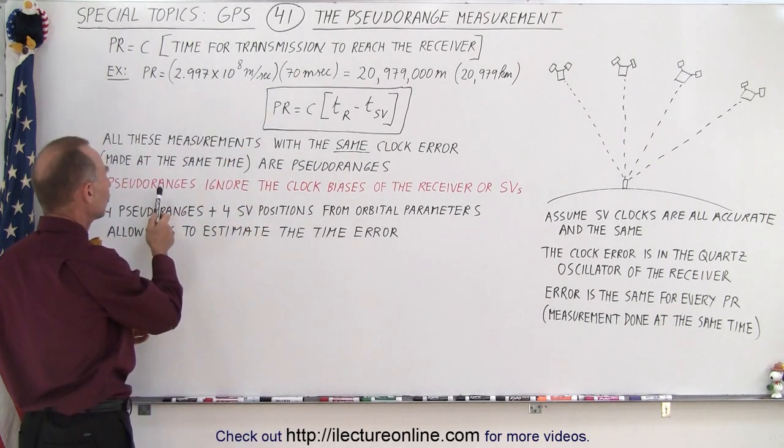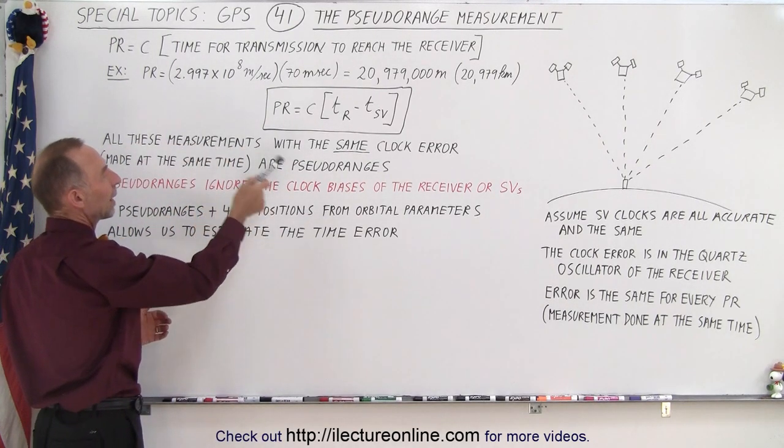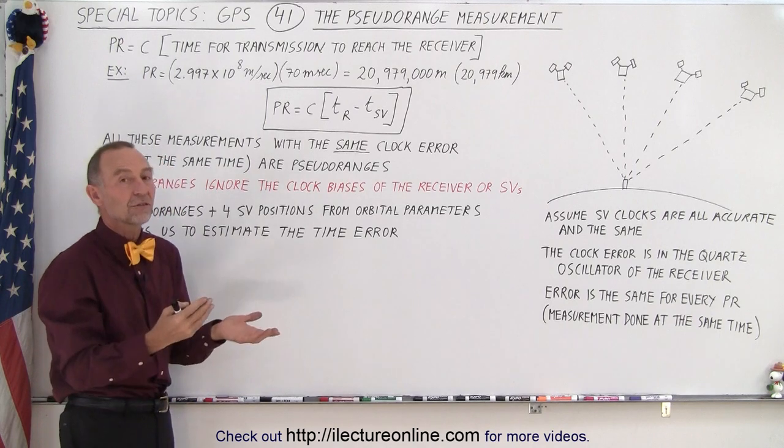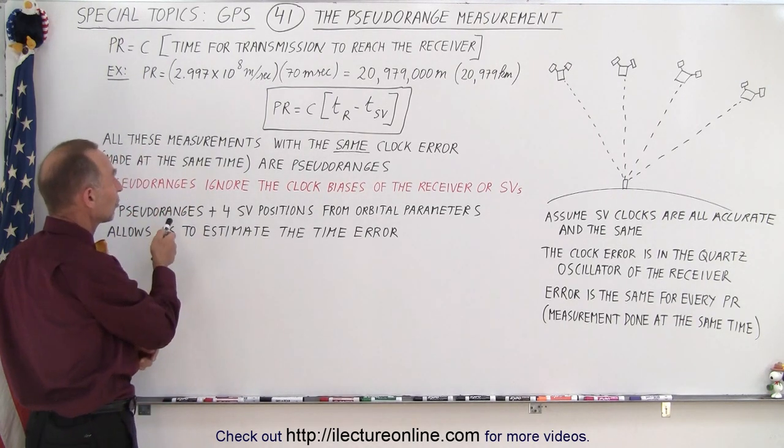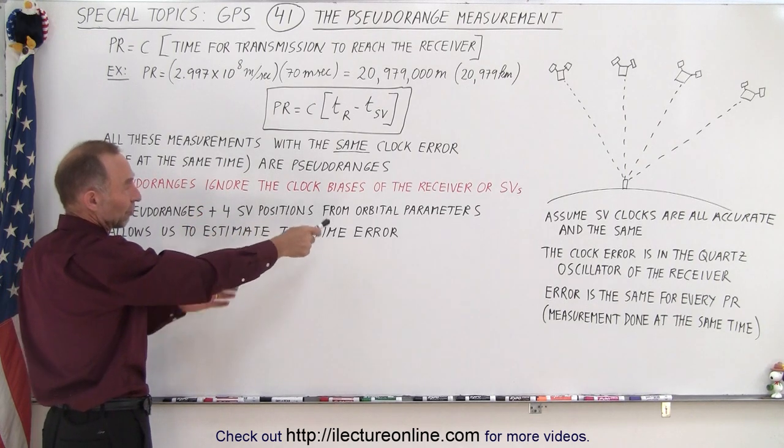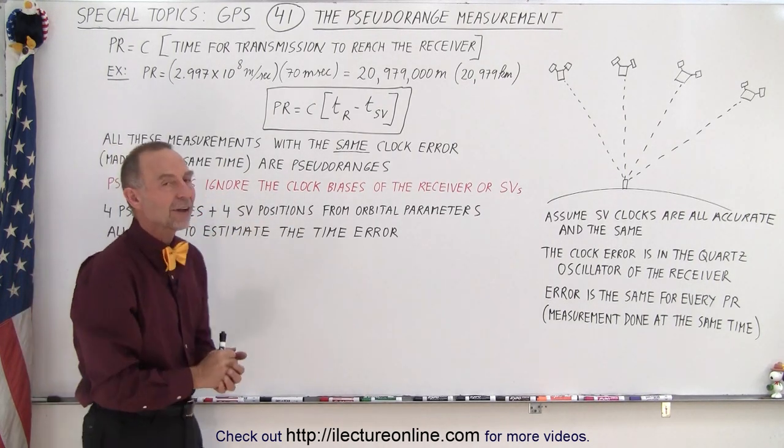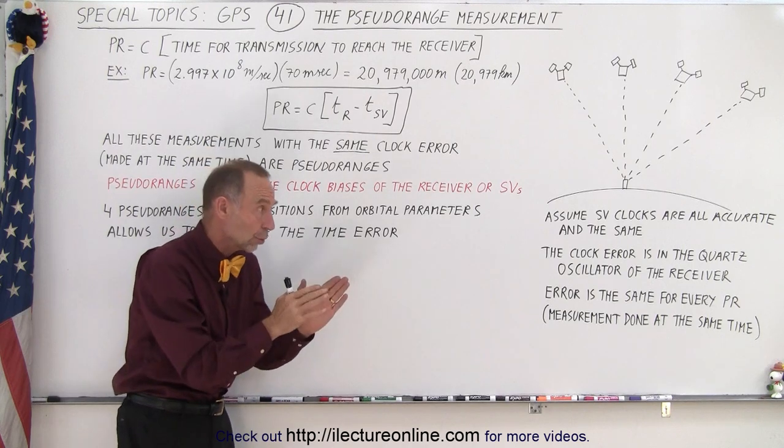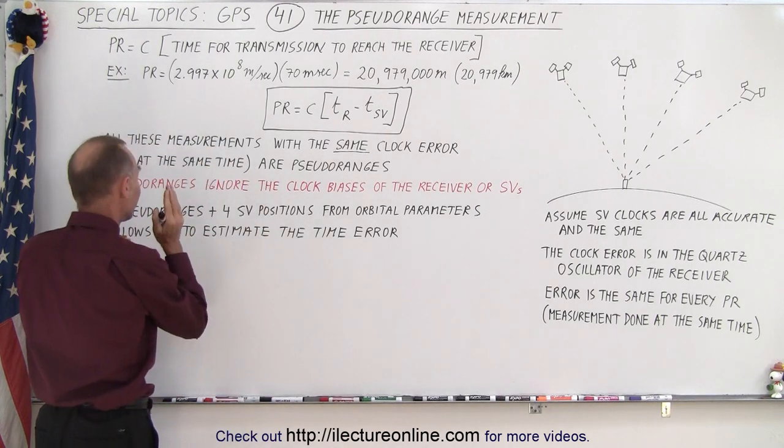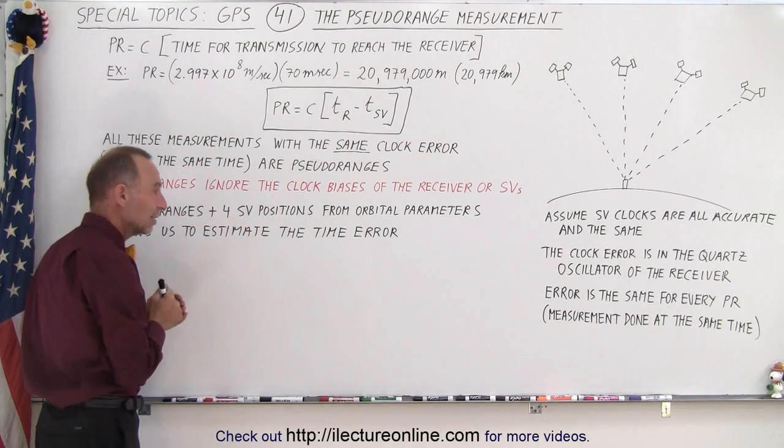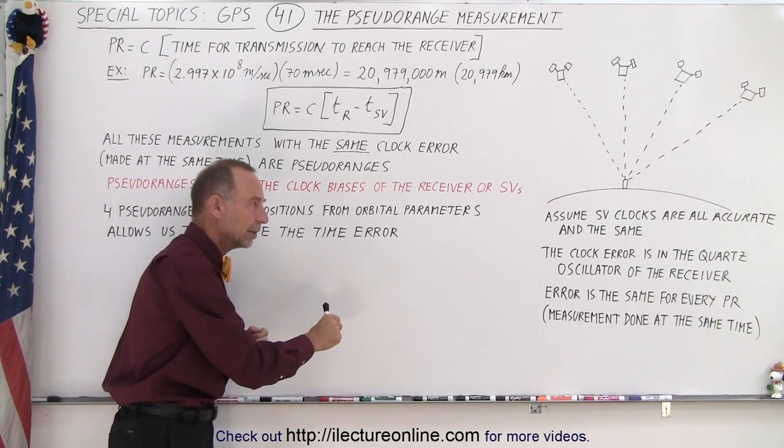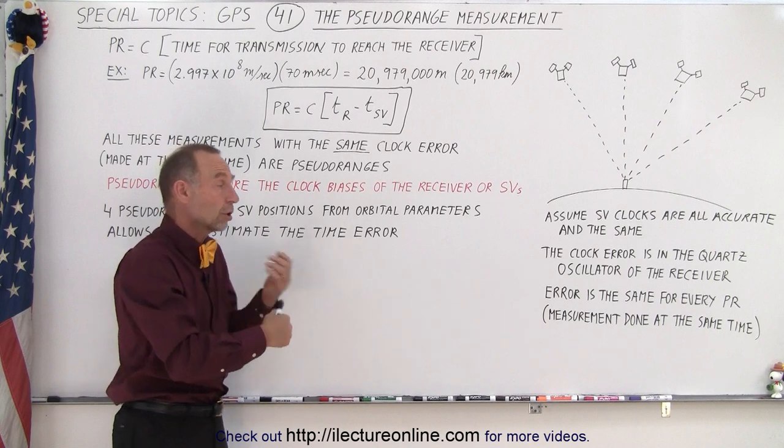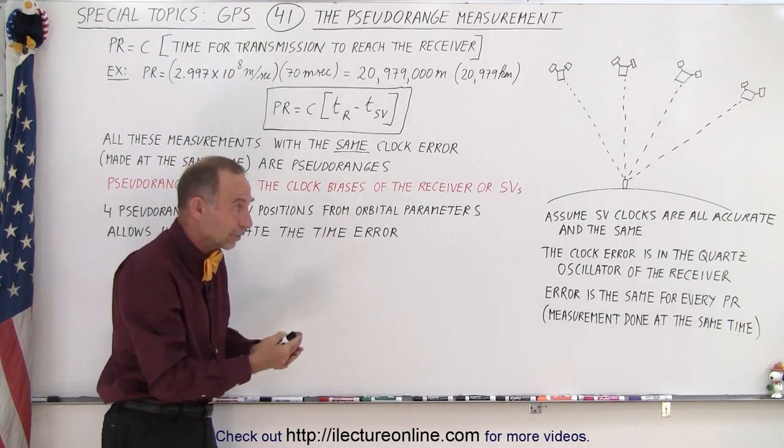So we could say that the pseudoranges simply ignore the clock biases of the receiver or the SVs, and the four pseudoranges plus four SV positions from orbital parameters allows us to estimate the time error. So later on we're going to show you how, using four satellites and taking the four pseudoranges, we can actually calculate the clock error in the receiver or the clock error in the receiver and the satellites together.